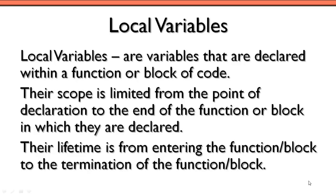Local variables are simply variables declared within some particular function or block of code — that could be a looping structure, a conditional structure, or anything like that. They can be referenced from the point at which they were declared to the very end of that function or block, and their lifetime is from entering that function or block until its termination.